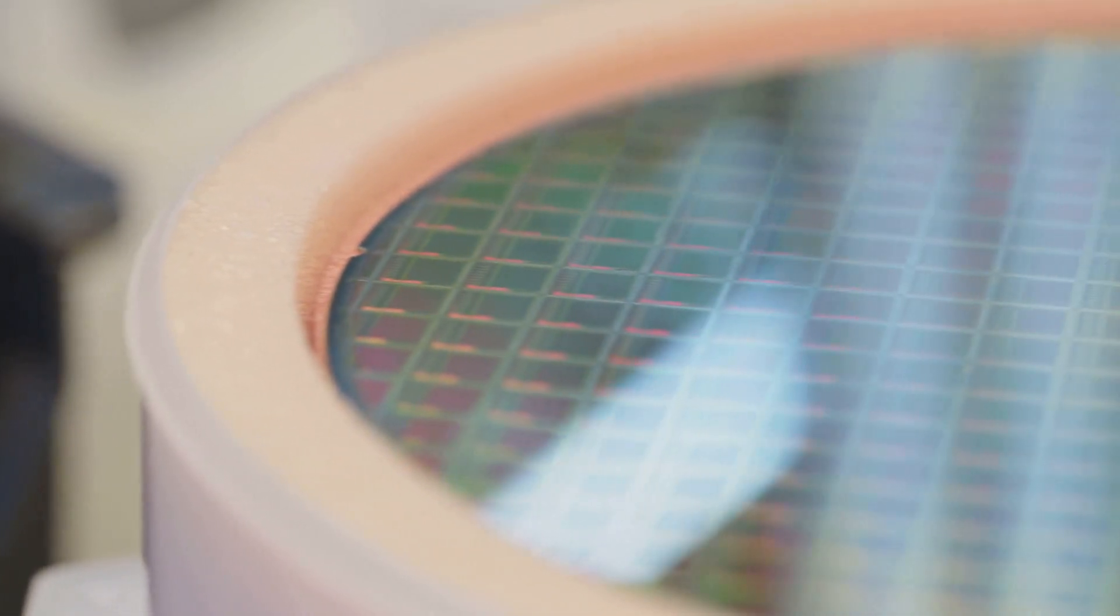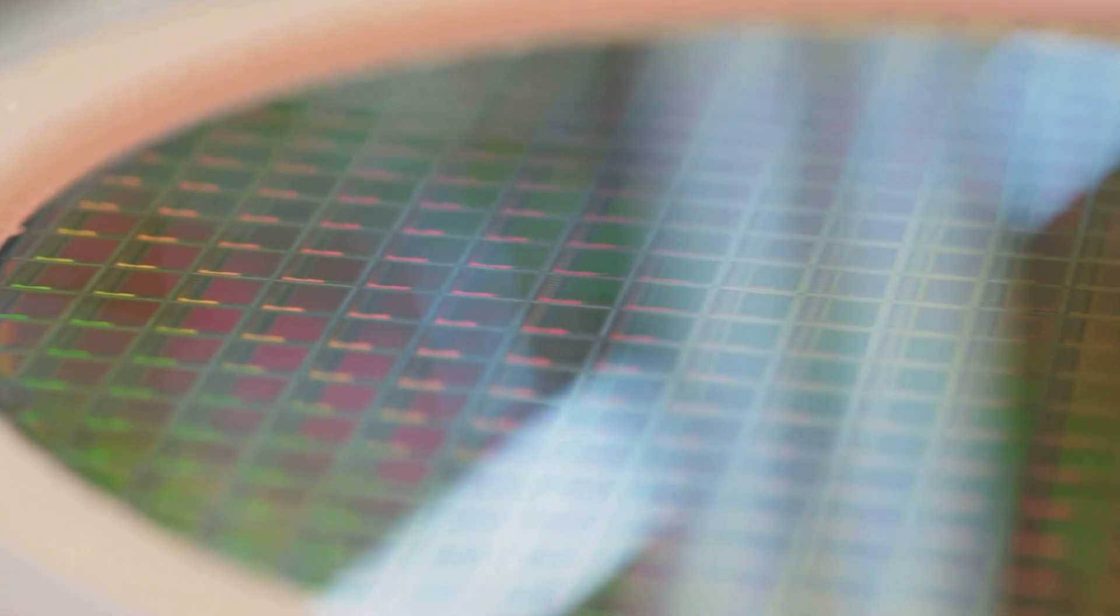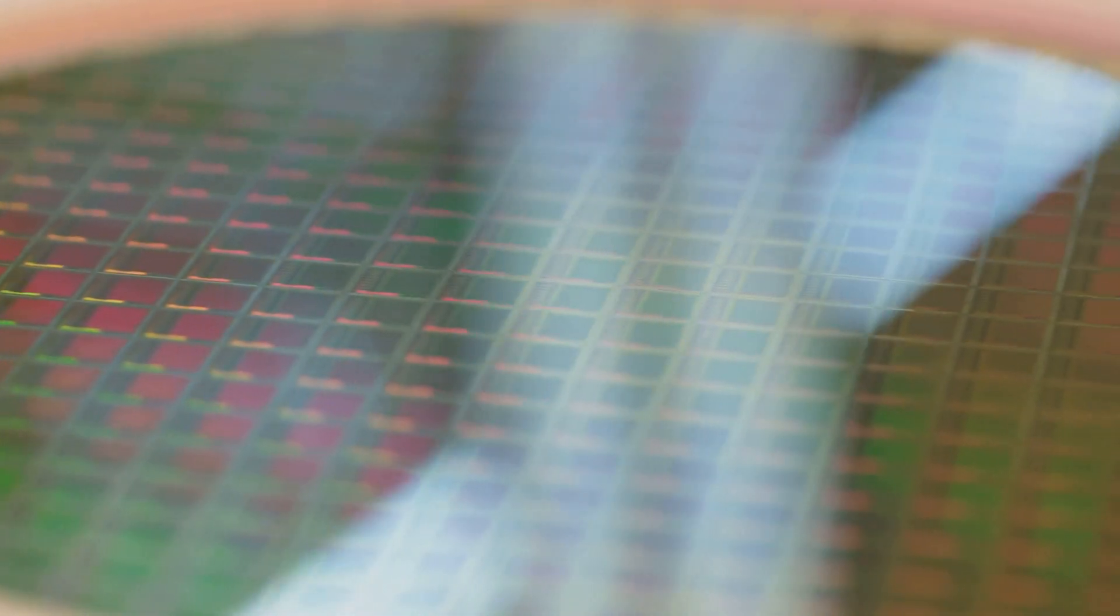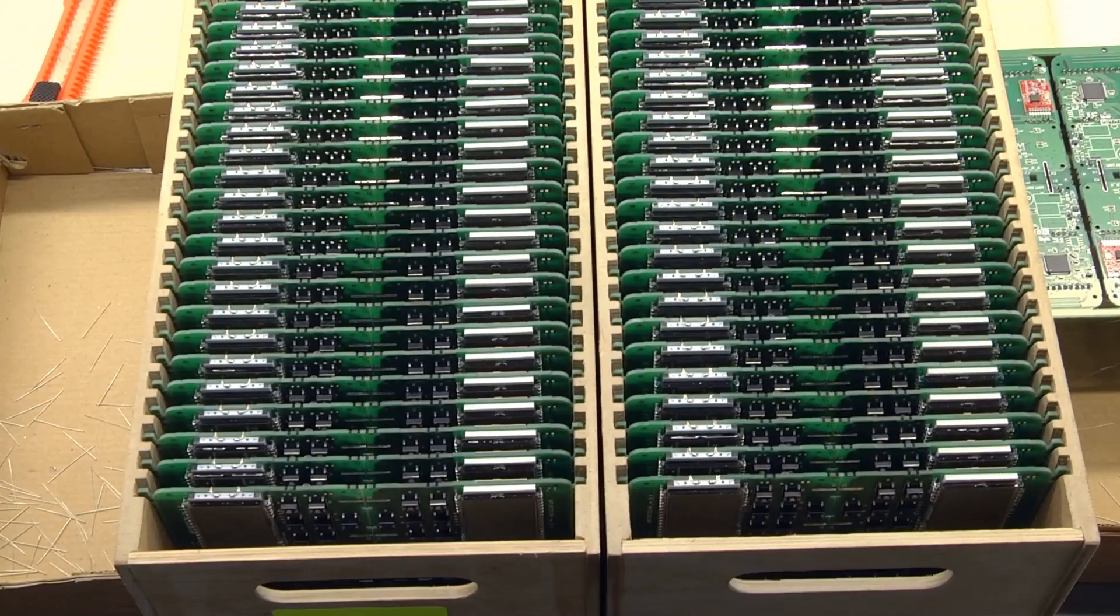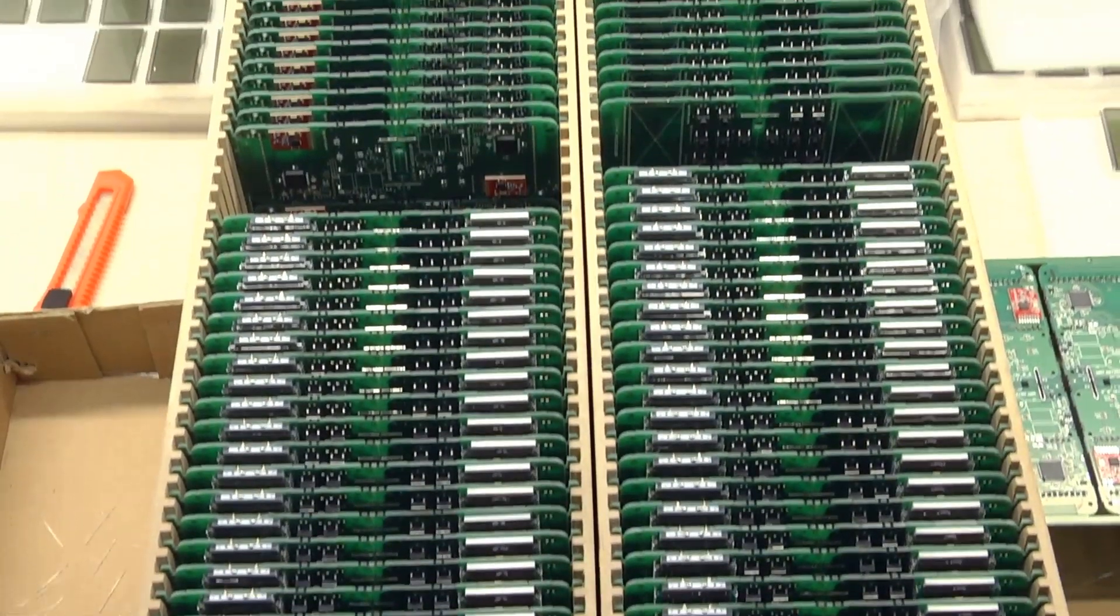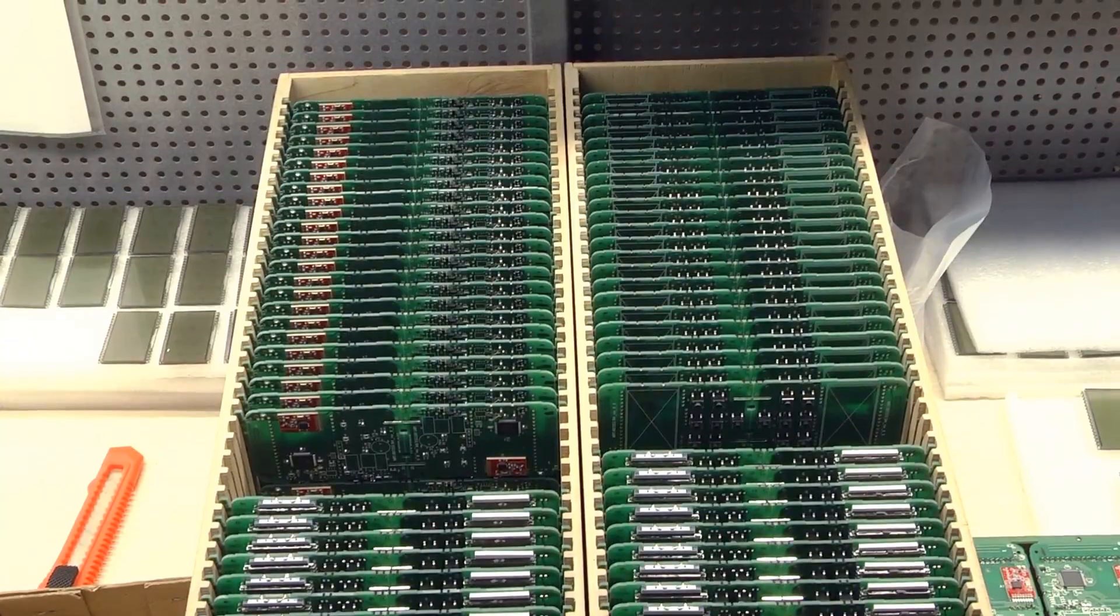The EUV light is focused onto a silicon wafer coated with a light-sensitive material called photoresist, which is crucial for the lithography process. A mask containing the intricate circuit pattern is placed between the light source and the wafer, acting as a stencil. The EUV light passes through the mask, transferring the pattern onto the photoresist with incredible accuracy.